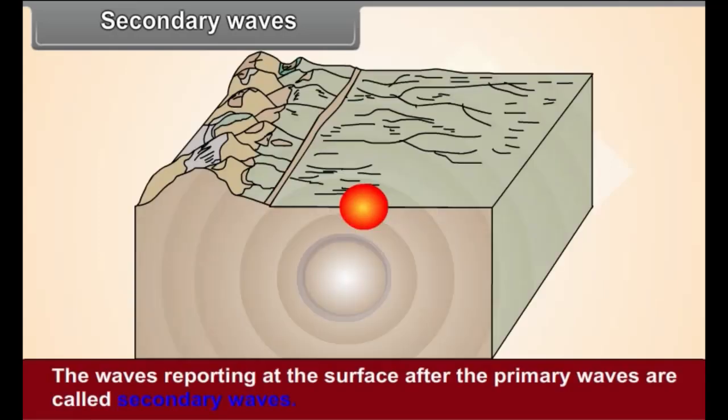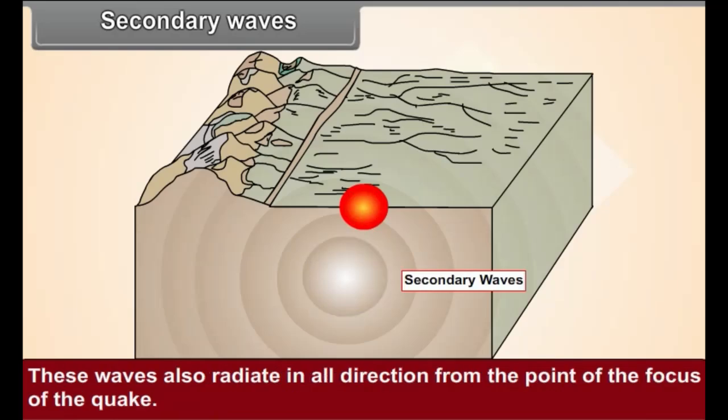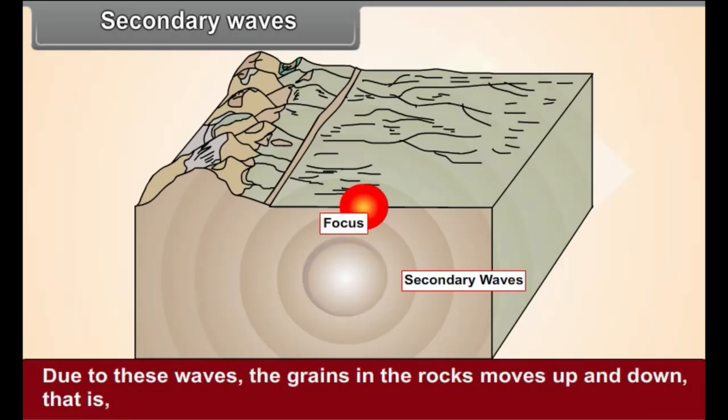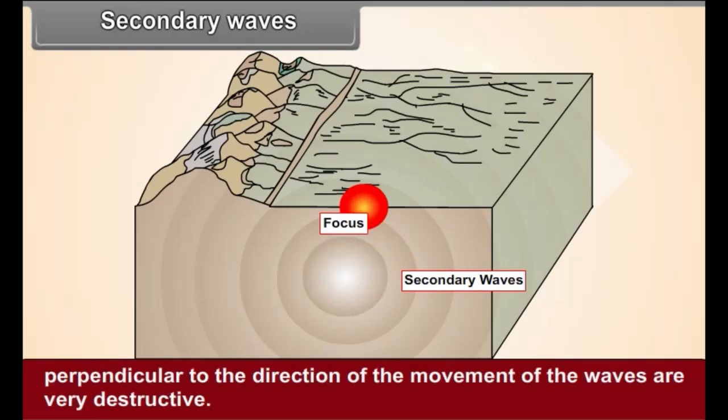Secondary waves. The waves arriving at the surface after the primary waves are called secondary waves. These waves also radiate in all directions from the point of the focus of the quake. Due to these waves, the grains in the rocks move up and down, that is, perpendicular to the direction of the movement of the waves. Therefore, these waves are very destructive.